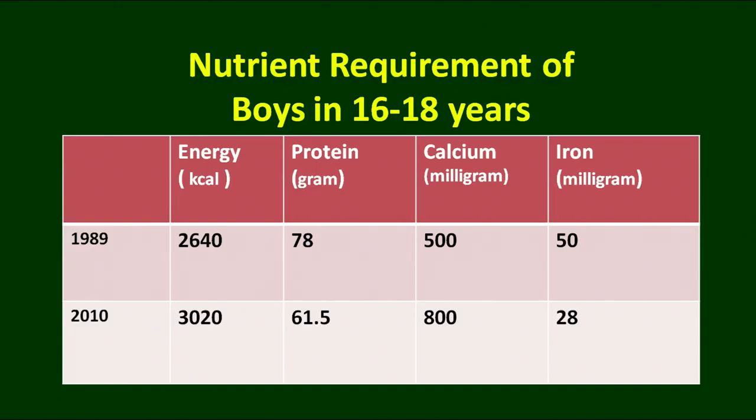For adolescent boys, energy requirements are much higher and protein requirements are also very high. Calcium requirements for both girls and boys are similar at 800 milligrams. The iron requirement for adolescent boys is slightly higher at 28 milligrams per day.